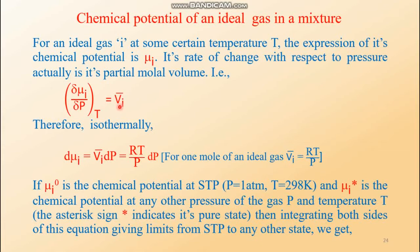That means the partial molar volume of the ith gas. I cannot use the term 'ith component' because it is now in pure state, not in a mixture, so the component term is omitted. Since the process is isothermal, constant T is automatically mentioned. So we can write d(muᵢ) equals V̄ᵢ dP, and we need not put any suffix T here.